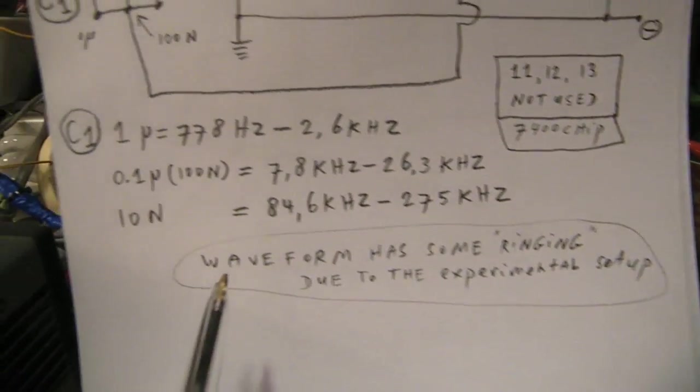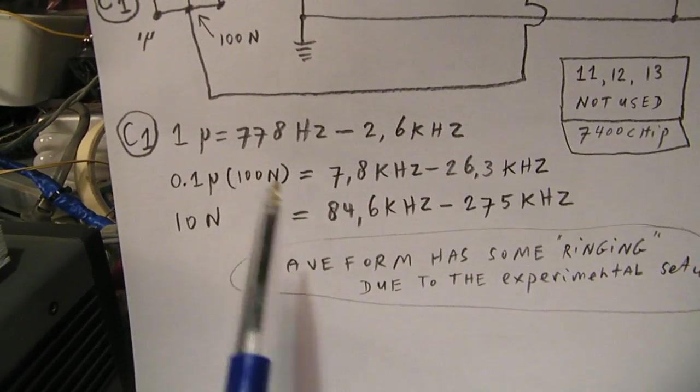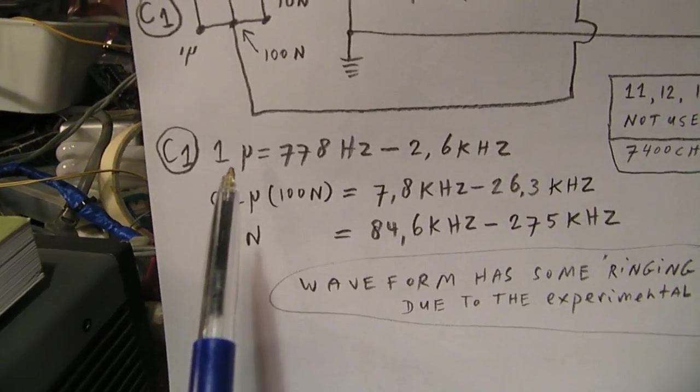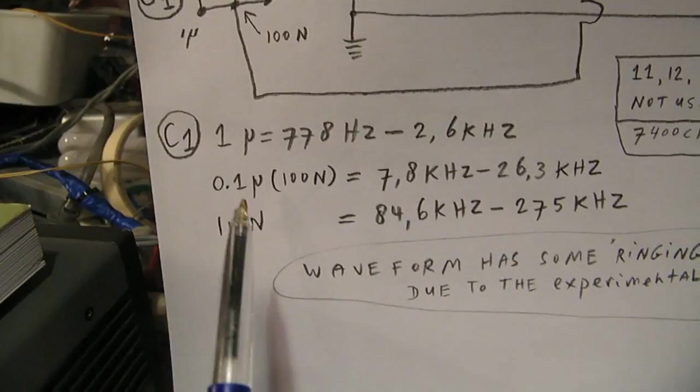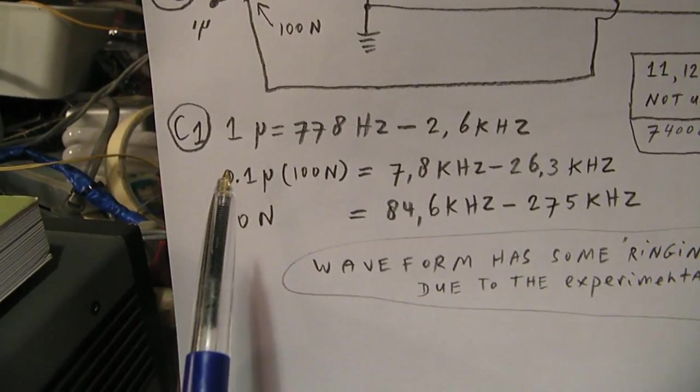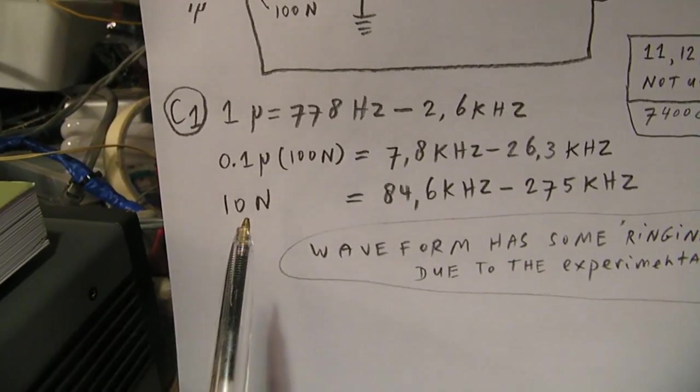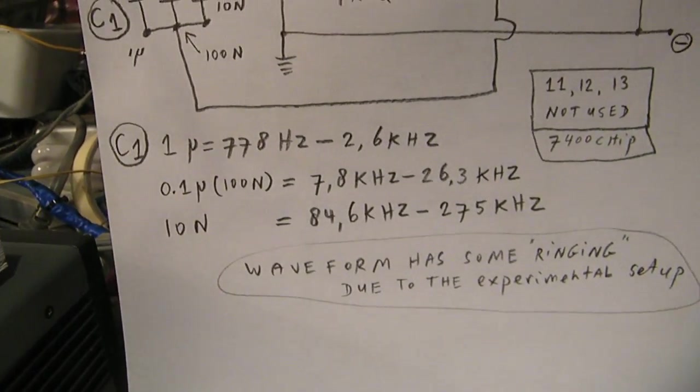You can see that it's always a factor 10 in these frequency bands when you use other capacitors. For instance, start with 0.47, take 47 nanofarad and 4.7 nanofarad here, you will find other frequency bands.